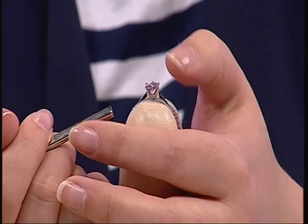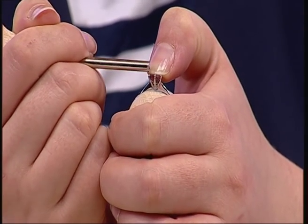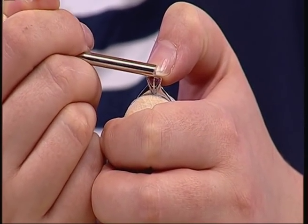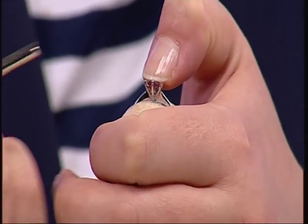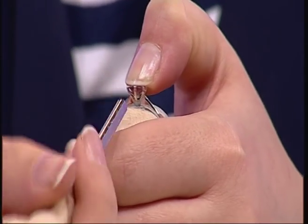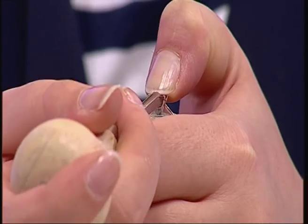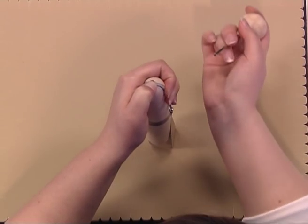To do this you want to place one thumb over the center of the stone. At this stage don't worry too much about its positioning because you can adjust it later and we just simply begin by using our pusher to ease over the claws.